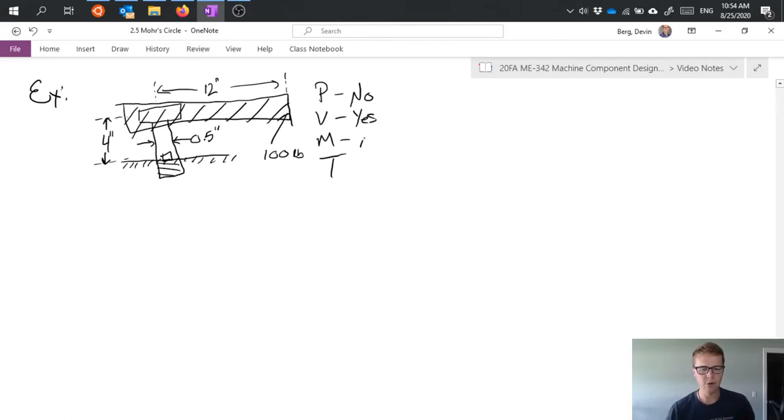And finally is there a torsion? Yes, this one's probably the most obvious because we're trying to turn that bolt, right? So we have to apply a torque to it and we have a force applied at a distance perpendicular to the axis that passes through the vertical axis of the shaft. So that 12 inch distance is our torque arm. So yes we do have a torque.